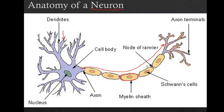In between some myelin sheaths are things called the nodes of Ranvier. That is where certain ions can be transferred in and out, allowing for the action potential or nerve impulse to keep passing through. Schwann cells are responsible for making the myelin sheaths.